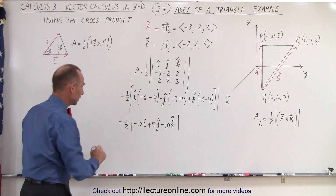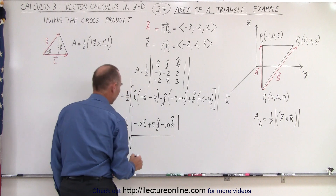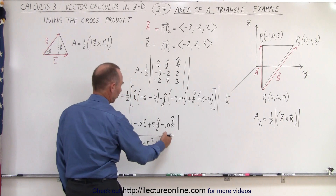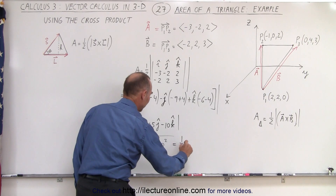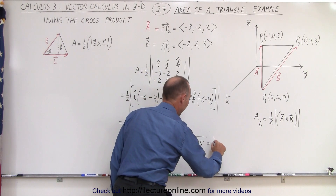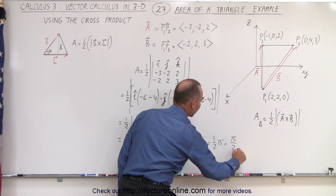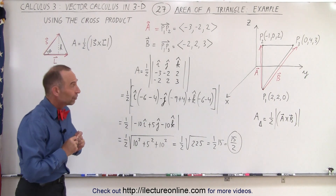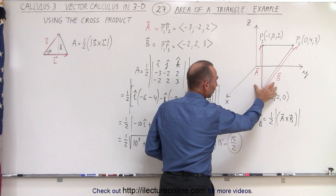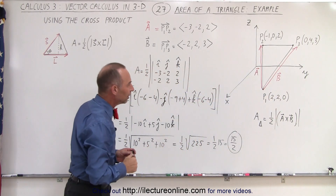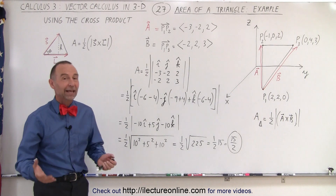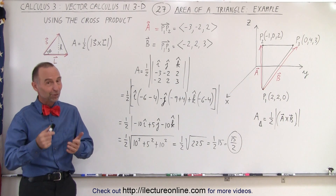We need the absolute value of that, so this equals one-half times the square root of the sum of the squares of the components: ten squared plus five squared plus ten squared. Since we're squaring, the negative signs don't matter. This equals one-half times the square root of two hundred and twenty-five. The square root of 225 is 15, so that's one-half times fifteen, or fifteen divided by two. That's how you find the area of a triangle in three-dimensional space — define two sides as vectors, take the cross product, find its magnitude, and multiply by one-half.